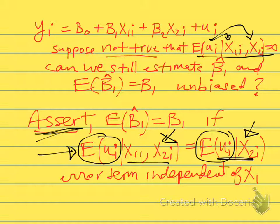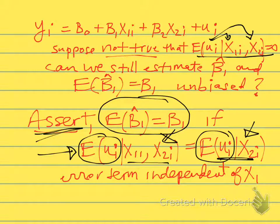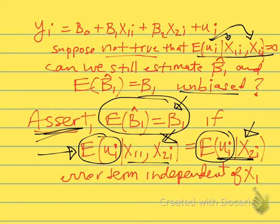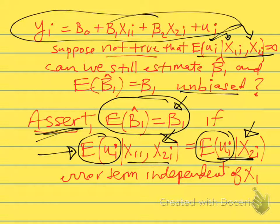So the error term is no longer correlated with x1. We're going to assert that if that's true, then the expected value of β̂₁, our estimated coefficient, will be equal to the true coefficient β₁. So β̂₁ will be unbiased. That's what we're going to show. We have our typical regression model with just two variables, and this can be generalized to having three or more variables.